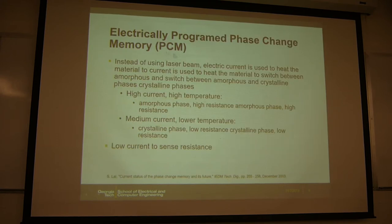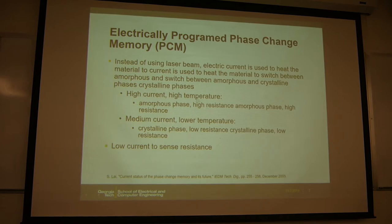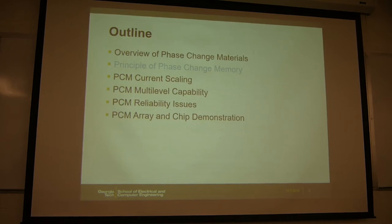Phase change memory is essentially an electrical version of the CD or DVD — here you use an electrical pulse to program, and then a small voltage to read. It's done in electrical format. The voltage or current pulse applies Joule heating to the sample, heating it up to drive the phase transition.